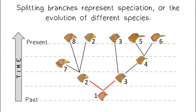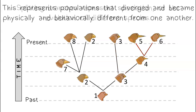Splitting branches represent speciation, or the evolution of different species. This represents populations that diverged and became physically and behaviorally different from one another.